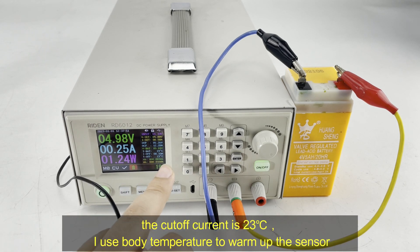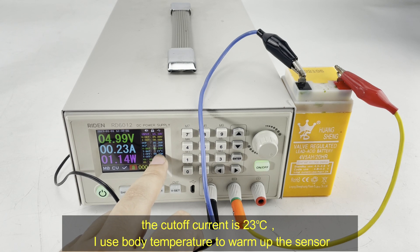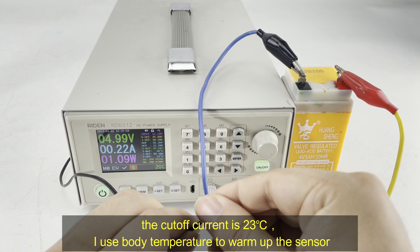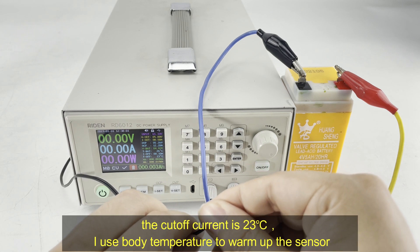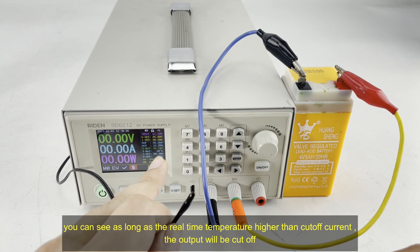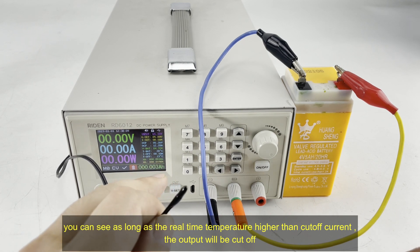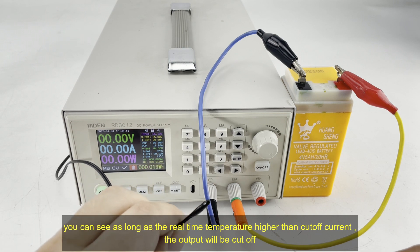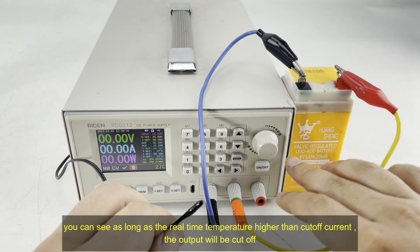The cut-off temperature is 23 degrees, and the real-time temperature is 19-20. I use my body temperature. You can see, as long as the temperature is higher than the T off, which is the cut-off temperature setting value, the output will be turned off.